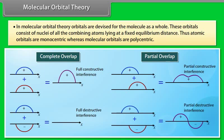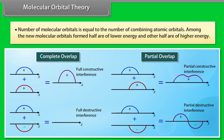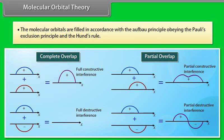Molecular Orbital Theory. In molecular orbital theory, orbitals are devised for the molecule as a whole. These orbitals consist of nuclei of all the combining atoms lying at a fixed equilibrium distance. Atomic orbitals are monocentric whereas molecular orbitals are polycentric. Molecular orbitals are formed by combination of atomic orbitals of nearly the same energy and proper symmetry. The number of molecular orbitals equals the number of combining atomic orbitals, and among the new molecular orbitals formed, half are of lower energy and the other half are of higher energy. Molecular orbitals are filled in accordance with the Aufbau principle, obeying Pauli's Exclusion Principle and Hund's Rule.